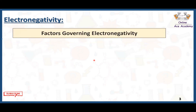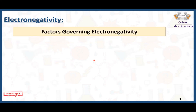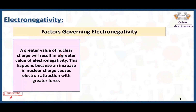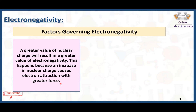Here we have some factors that govern or affect electronegativity. A greater value of nuclear charge will result in a greater value of electronegativity. This happens because an increase in nuclear charge causes electron attraction with greater force.